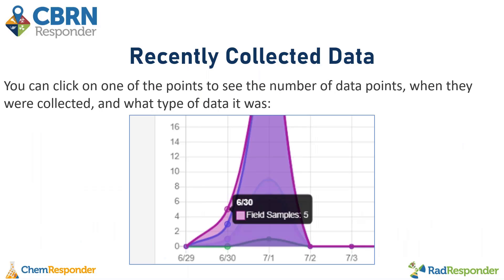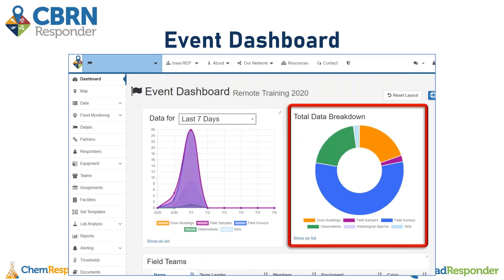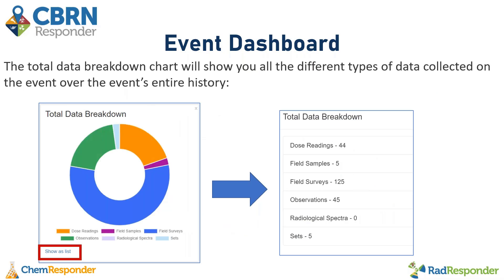You can click on one of the points to see the number of data points collected, when they were collected, and what type of data point it was. You also have a Total Data Breakdown graph, which will show you all the different types of data collected on the event over the event's entire history. There is a key — for this example, orange represents dose readings, purple represents field samples, and blue represents field surveys. You can hover over any of the sections to see the number of data points collected, or click the Show as List button to get a total data breakdown that's a little easier to read.